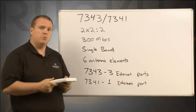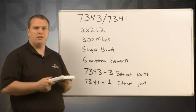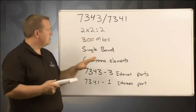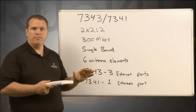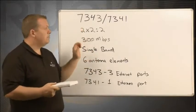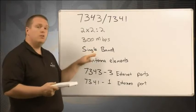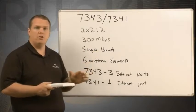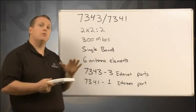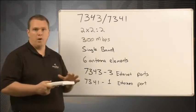Now the difference between the big brother 7363 and these models is the number of radios. This model, the 7343 and 41, has a single band 2.4 GHz radio where the 7363 is a dual radio model.